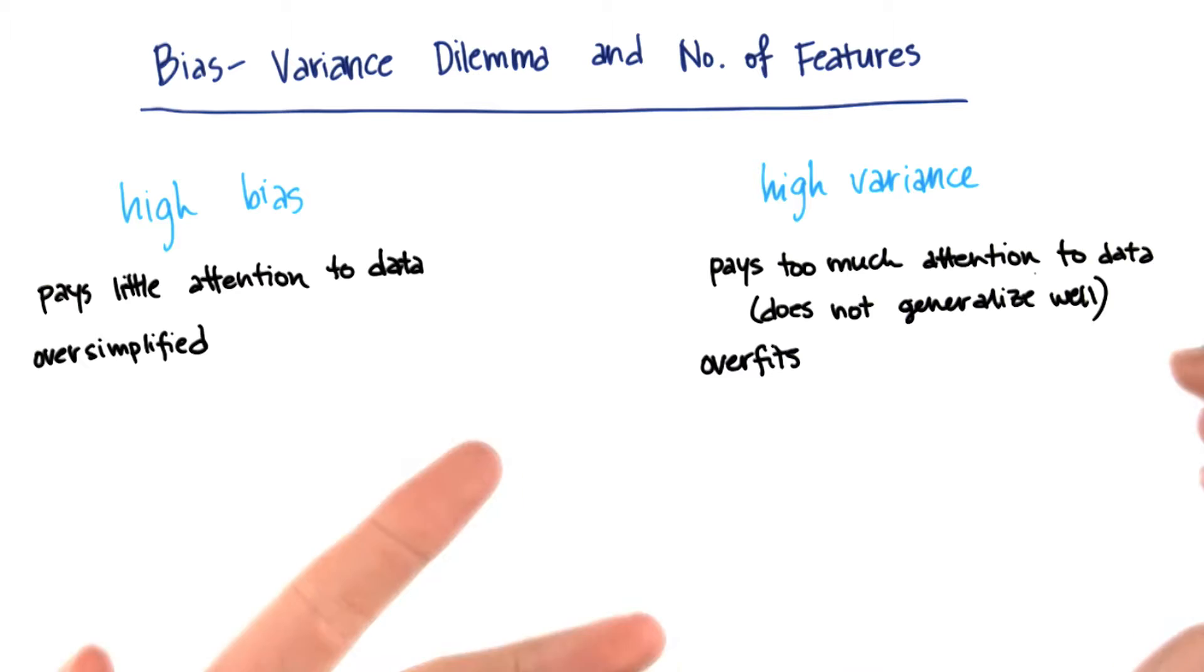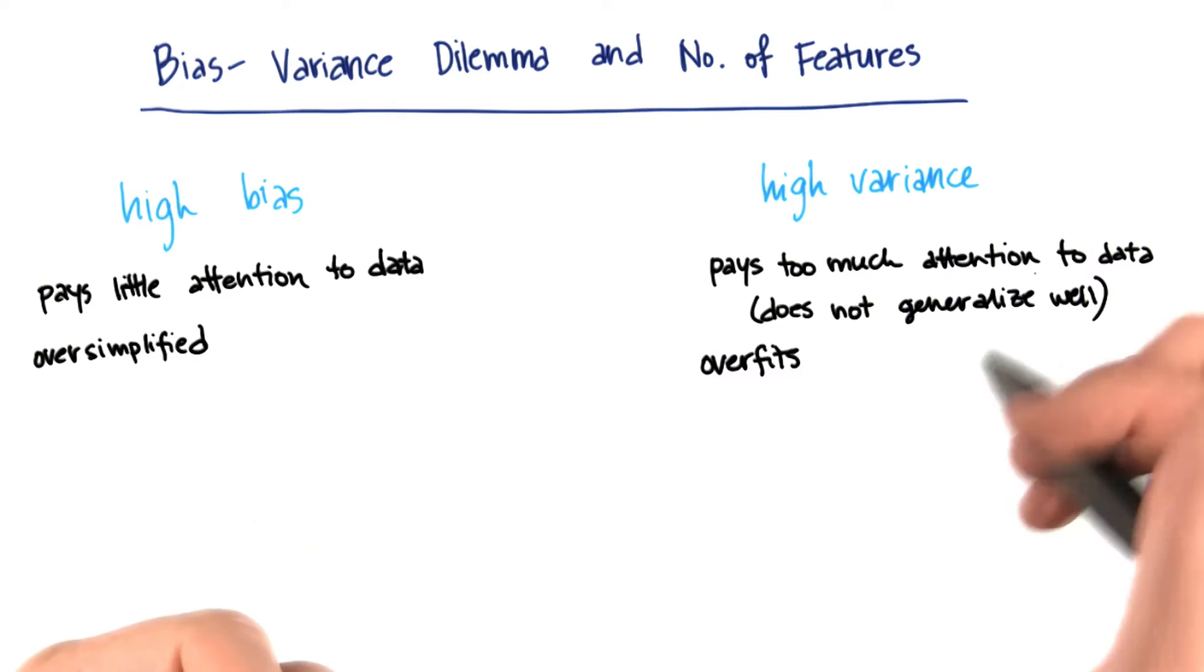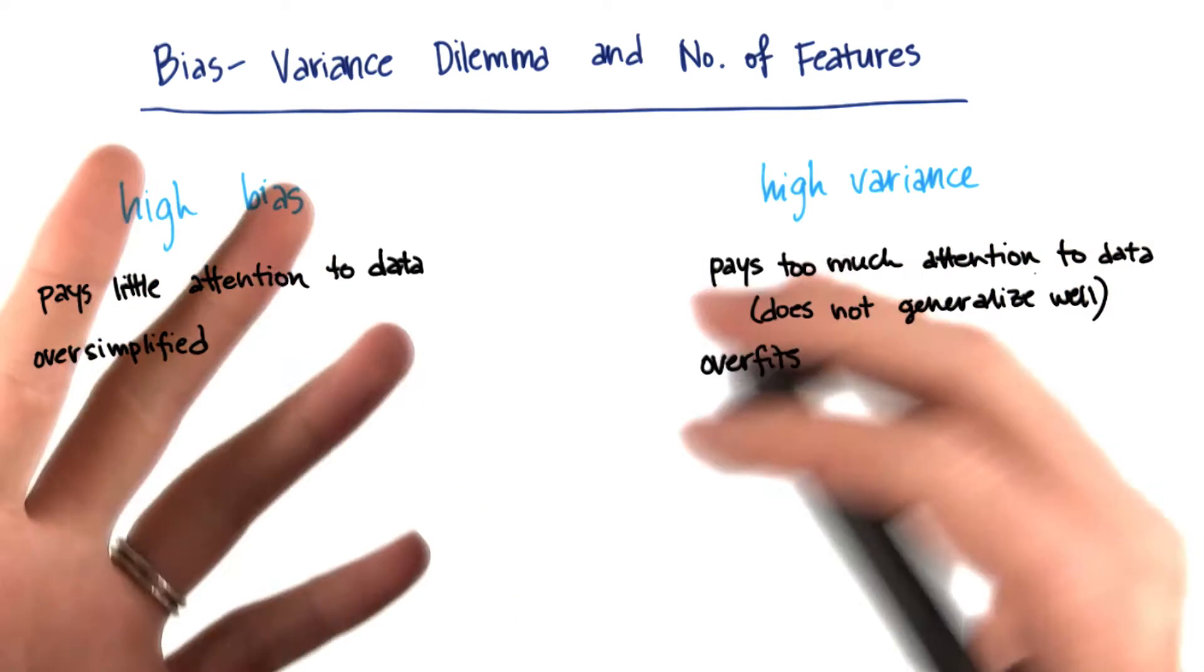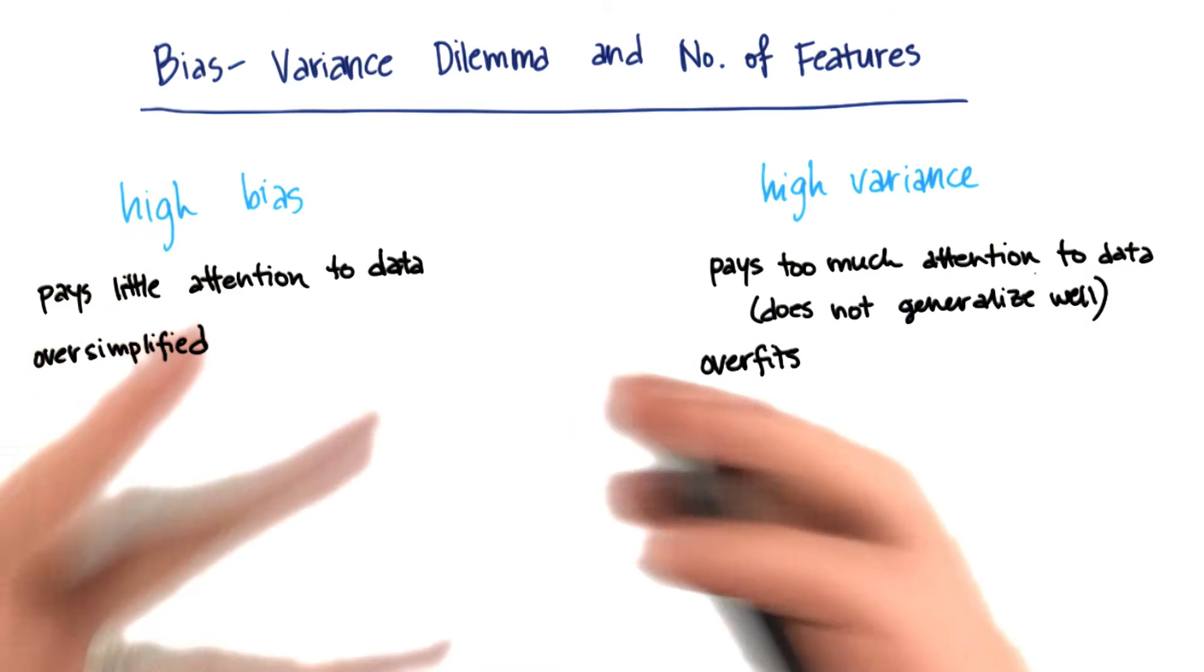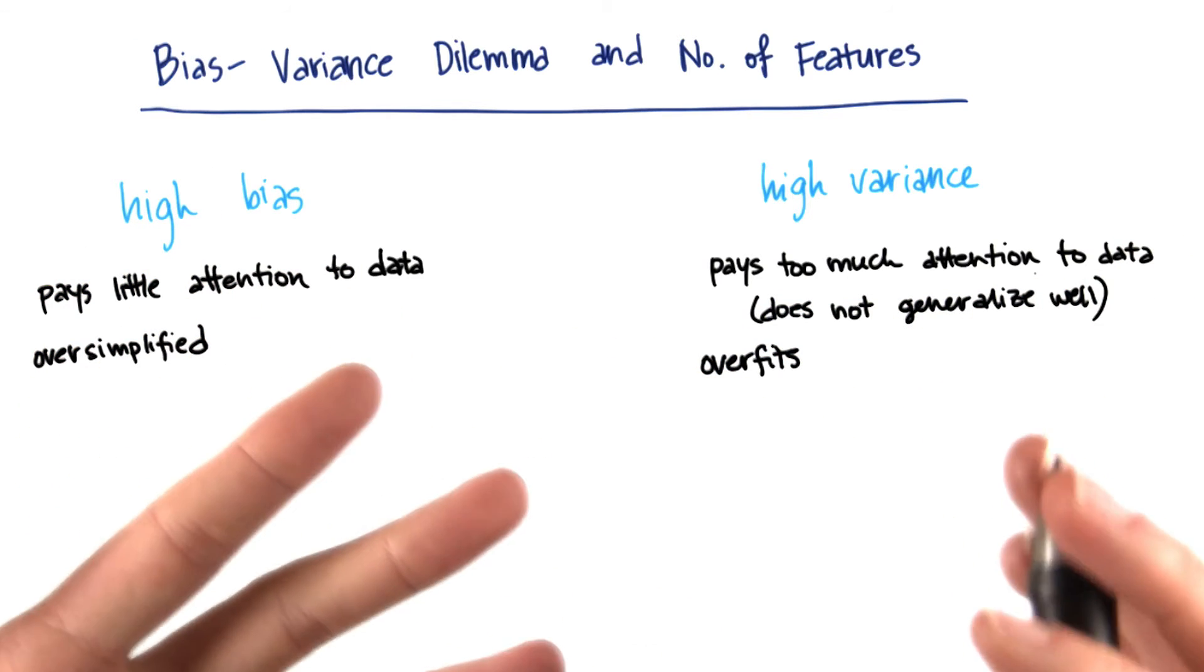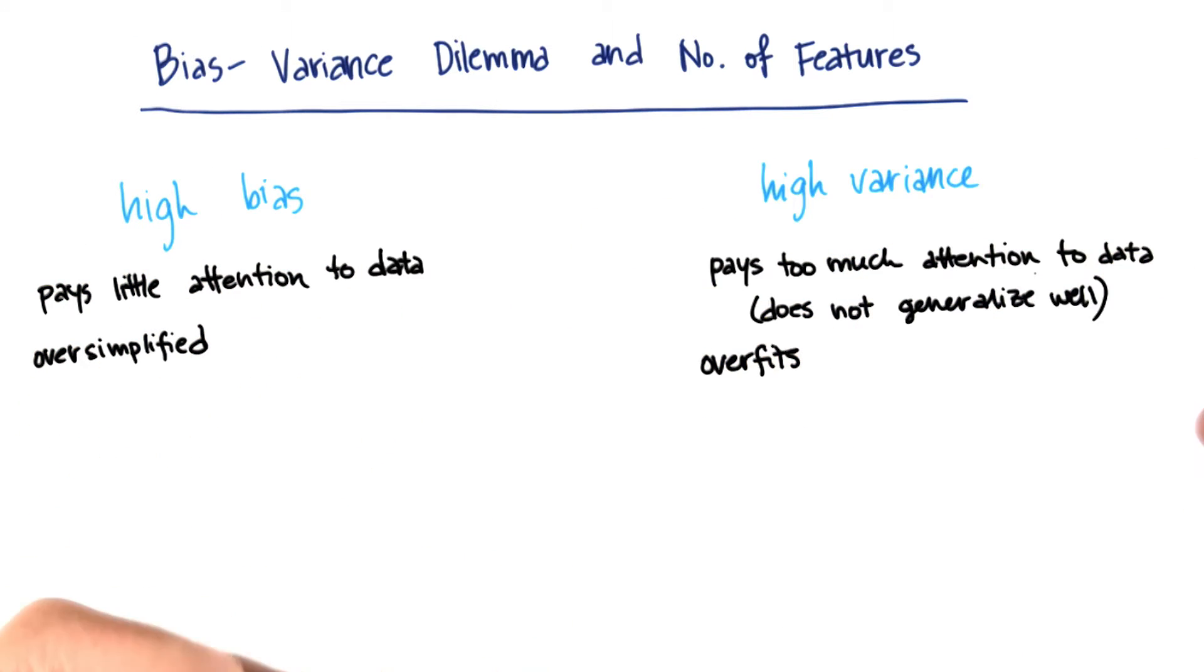On the other hand, an algorithm with high variance pays too much attention to the data. It doesn't generalize well to new situations it hasn't seen before. It's basically just memorizing the training examples.